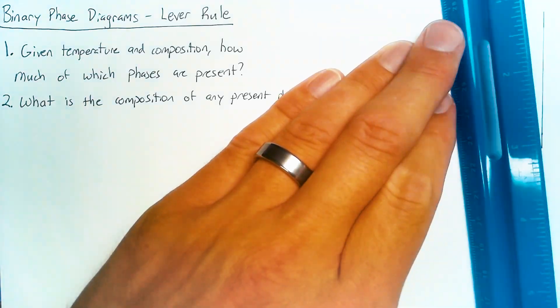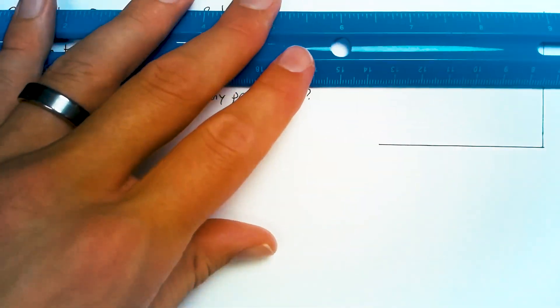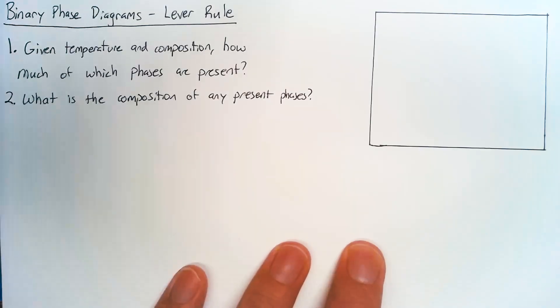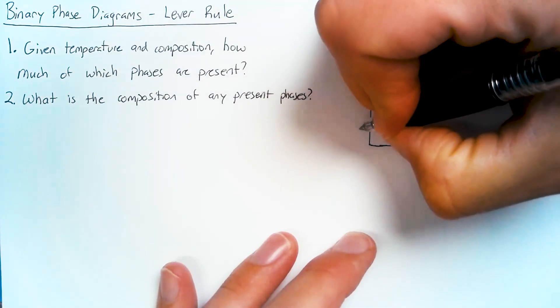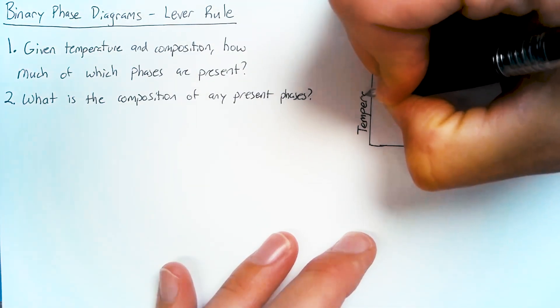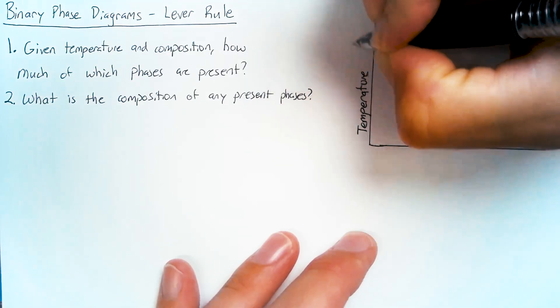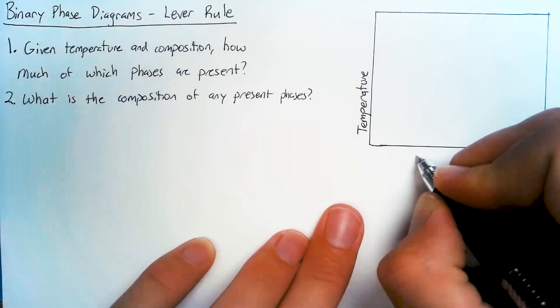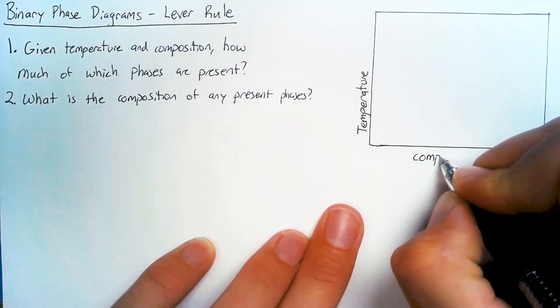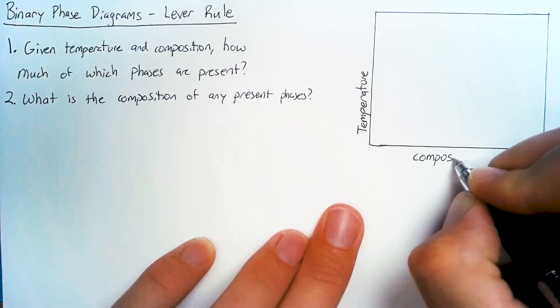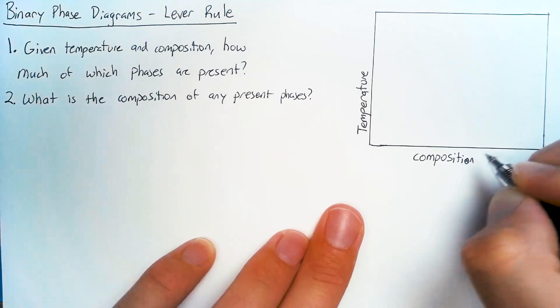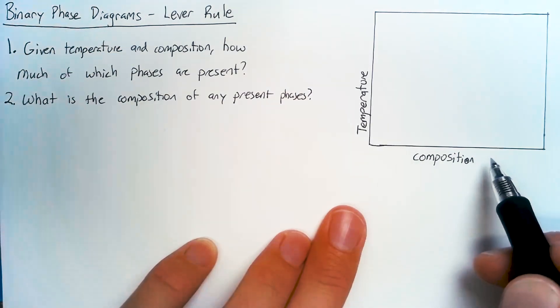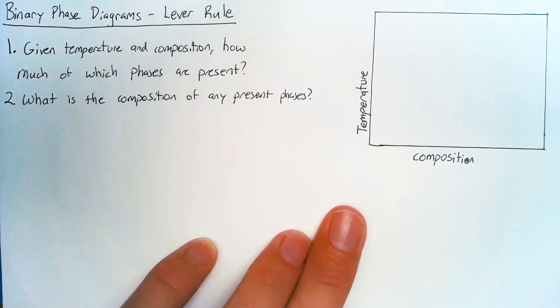So let's start off just by sketching a phase diagram. Now the y-axis on the phase diagram is typically just the temperature, meaning what temperature is our overall material at. The x-axis is the composition. Now since this is a binary phase diagram, meaning there are two materials, we only need one number in order to indicate the overall composition.